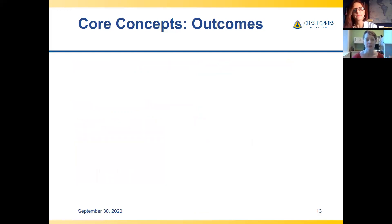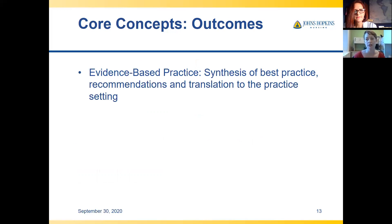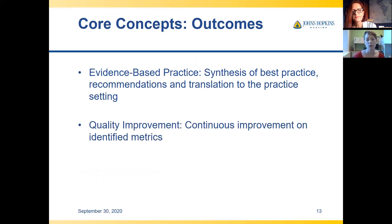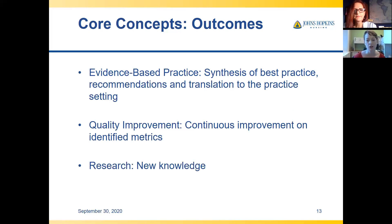Once you do one of these projects, what's the end result? For an evidence-based practice project, you're doing a synthesis of best practice, which generates best practice recommendations and a translation to your practice setting. For quality improvement, the word 'outcomes' can be misleading because QI is a cyclical process that never really ends — you have an improvement on an identified metric with ongoing monitoring, continually making sure you've established and sustained the change. And with research, at the end you're hoping to have new knowledge that can be generalized to a bigger setting.